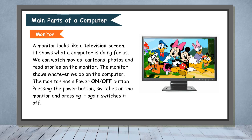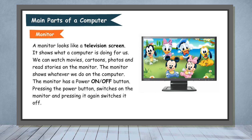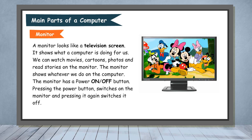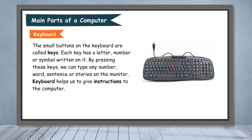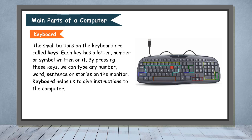The monitor has a power on and off button. Pressing the power button switches on the monitor and pressing it again switches it off. Keyboard. The small buttons on the keyboard are called keys. Each key has a letter, number or symbol written on it. By pressing these keys, we can type any number, word, sentence or stories on the monitor.